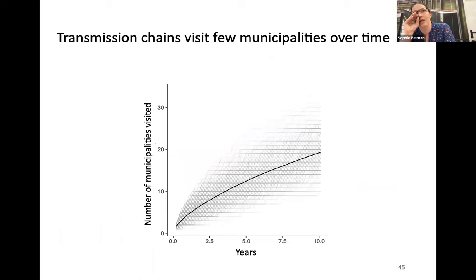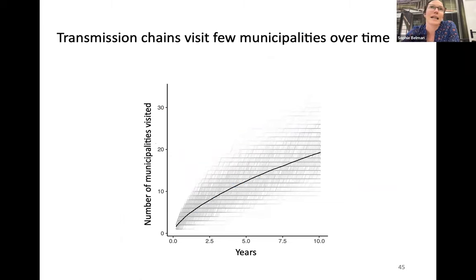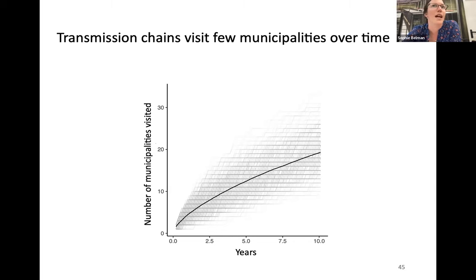We also looked at the number of municipalities visited over time. It's not very many visited over time, which makes sense with the 50 years to spread. It obviously varies by transmission chain and where you start.